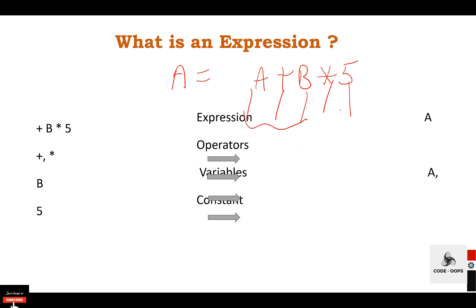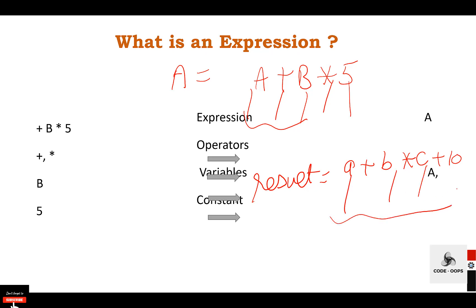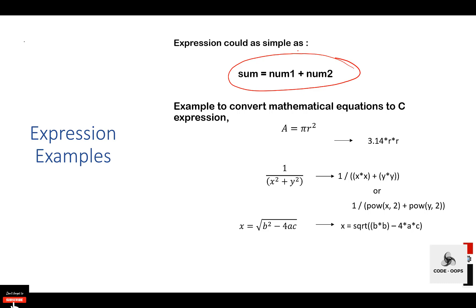Another example: result = a + b * c + 10. Here result is a variable to store the expression value, a, b, and c are variables, plus, multiply, plus, and equal to are the operators, and 10 is a constant value. Another example: sum = num1 + num2. Here sum is a variable to store the expression value, equal to and plus are the operators, and num1 and num2 are the variables.